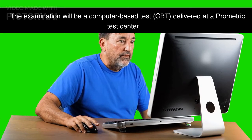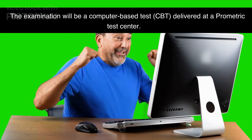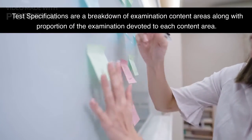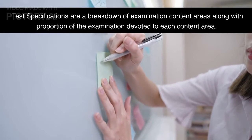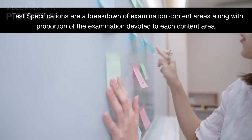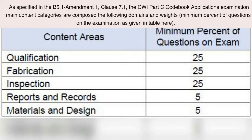Examination Delivery: The examination will be a computer-based test (CBT) delivered at a Prometric Test Center. Test specifications are a breakdown of examination content areas along with the proportion of the examination devoted to each content area. As specified in B5.1 Amendment 1, Clause 7.1, the CWI Part C Code Book Applications Examination main content categories are composed of the following domains and weights, with the minimum percent of questions shown in the table.